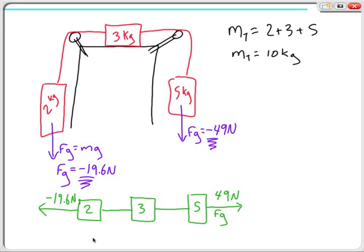I can immediately say that my F net for this particular system is going to be equal to 49 newtons minus 19.6 newtons. Or I can say that my F net, if I just do this arithmetic here, is going to be 29.4 newtons.